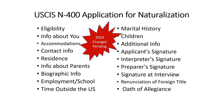The N-400 covers accommodations for physical disabilities, contact info — which you will also see on the census — residence, which is gone into deeply on the census, information about parents, biographical information — which you will see on the census — employment and school, travel or time outside the United States, marital history, and children. Children are referred to on the census in an indirect way, because it does talk about how you are related to the head of the household.